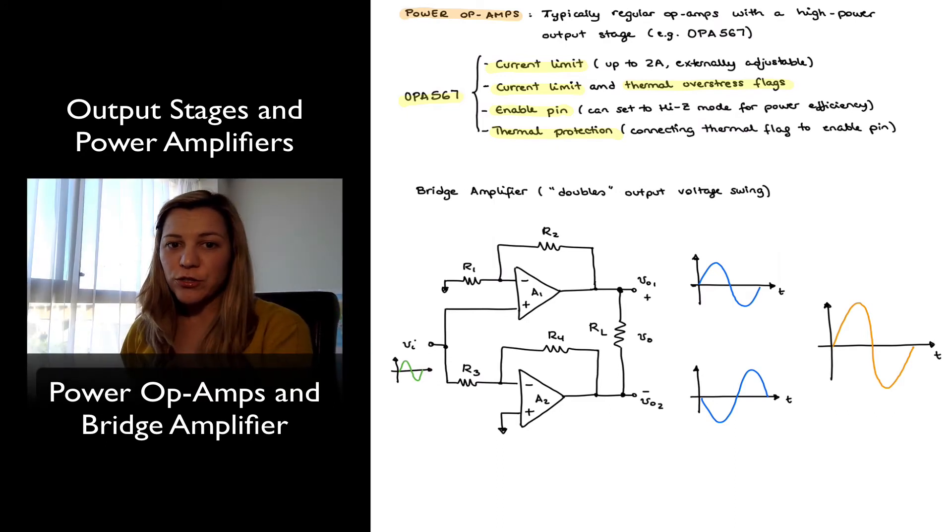A common configuration that is used with power amplifier circuits is that of a bridge amplifier. The advantage of the bridge amplifier is that it allows you to double the output voltage swing to close to twice the original voltage swing of each op-amp, without increasing the supply voltage.